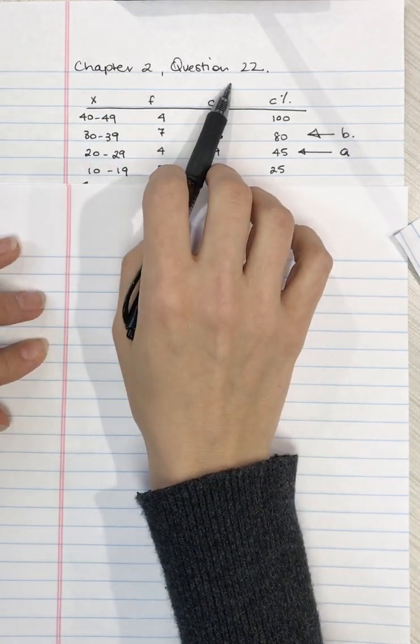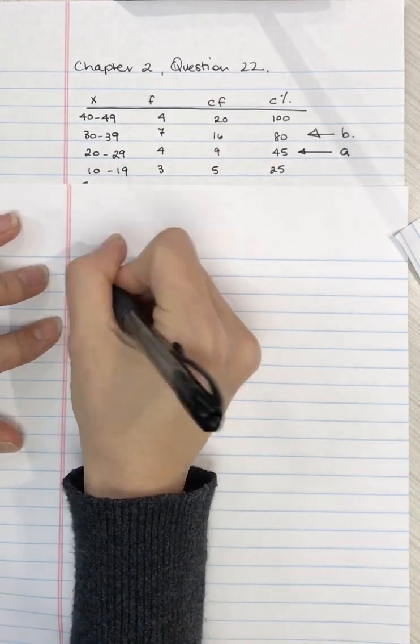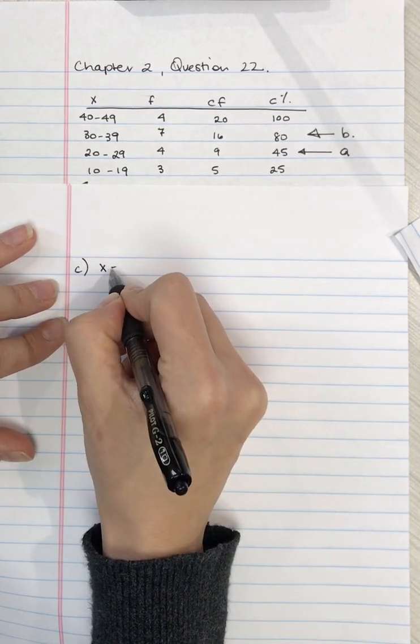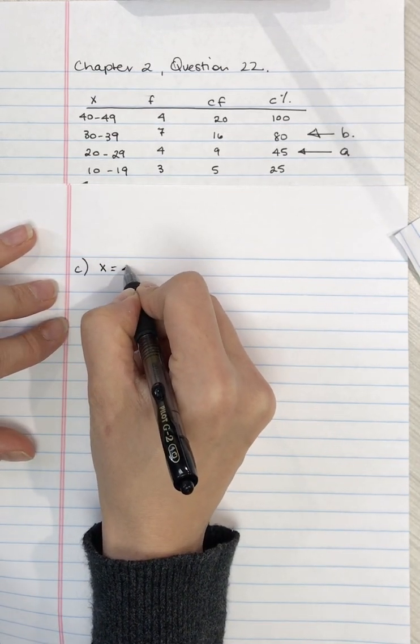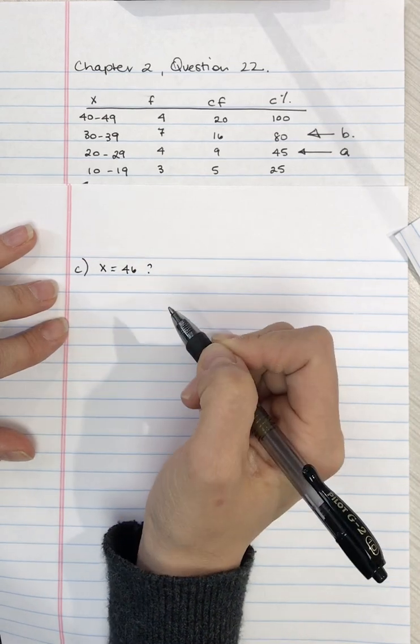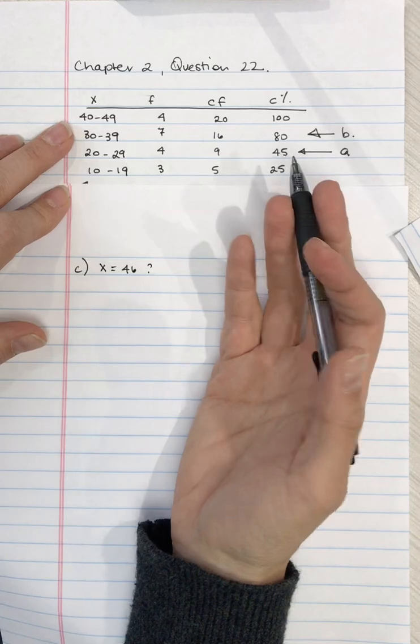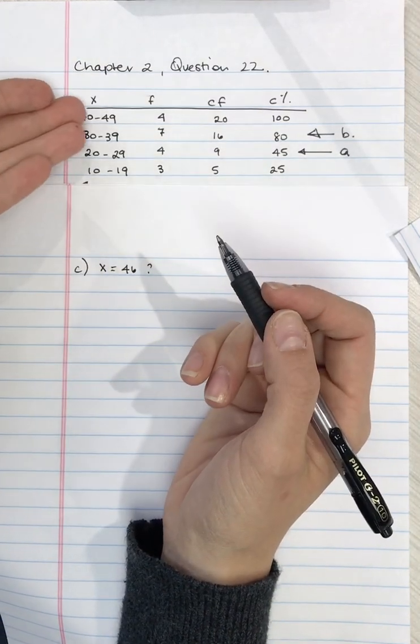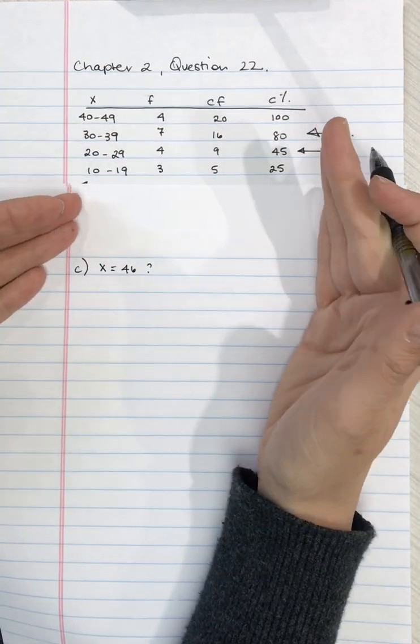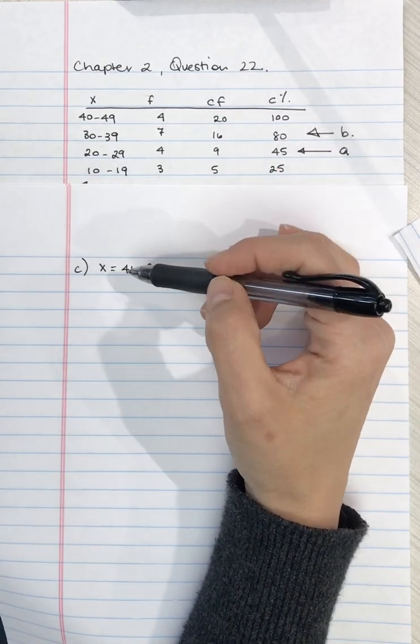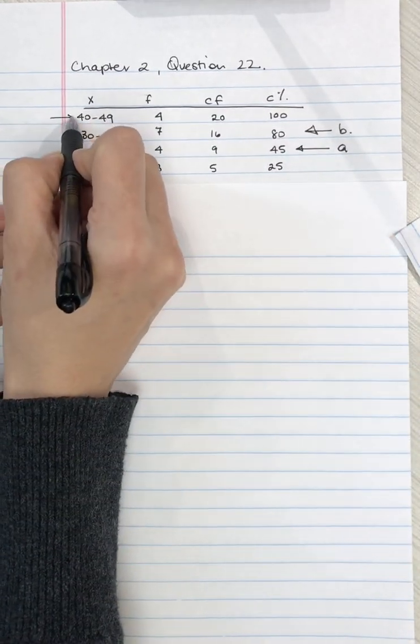Chapter 2 question 22C asks what is the percentile rank associated with a score of 46? So we need to find what interval does 46 fall in and then we're going to figure out what percentile rank that is associated with. So a score of 46 falls in this interval.